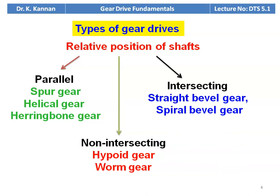When the shafts are perpendicular, intersecting at 90 degrees or lesser, we use straight bevel gear or spiral bevel gear. When the two shafts are non-intersecting, we use hypoid gear and worm gear. In our discussion on design of gears, we will be designing spur gear, helical gear, straight bevel gear, and worm gear.